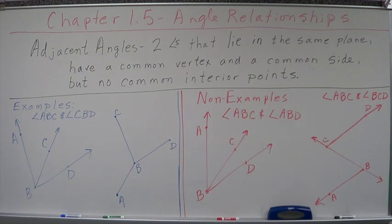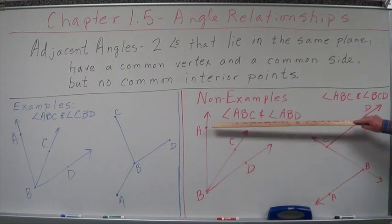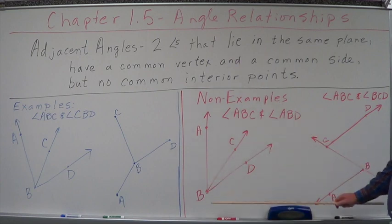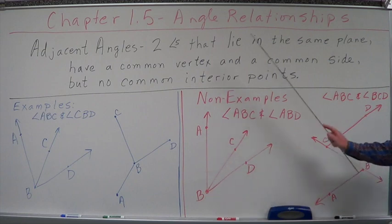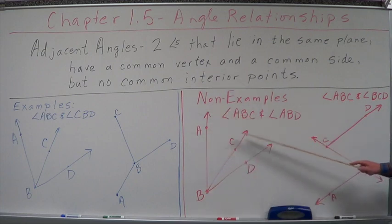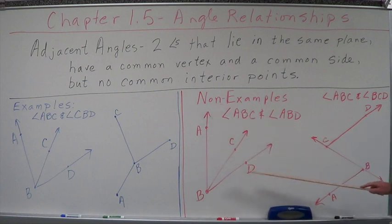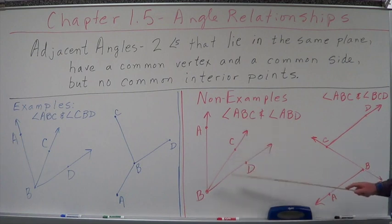Now let's go over here in red to the non-examples. Non-examples. We have angle ABC and angle ABD. Angle ABC is made up of ray BA and BC. Angle ABD is made up of ray BA and BD. So we have ABC and ABD. But inside of ABD we have what? We have this thing, don't we? Now, these two share a common vertex. It's a common vertex in B. They share a common side. They share ray BA as a common side.